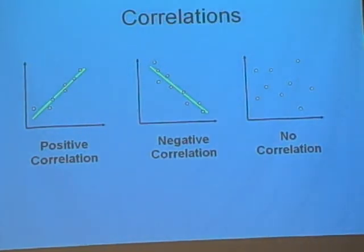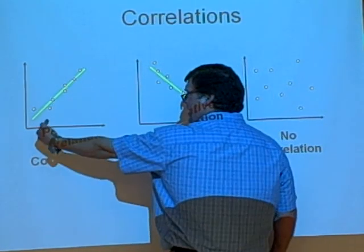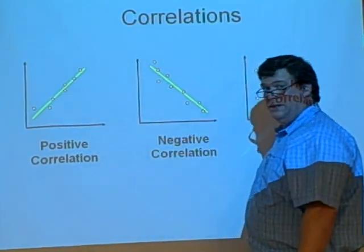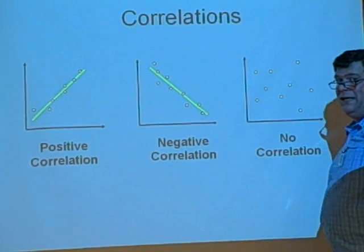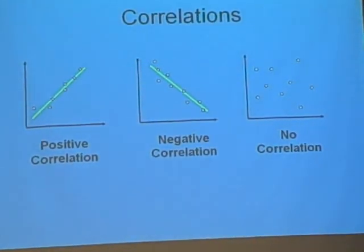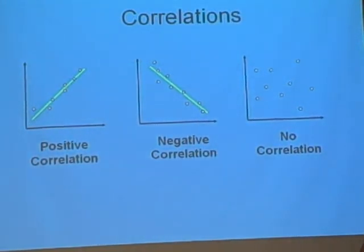Correlations. A positive correlation is when, as time goes by, your money is going up. That's a positive correlation. As time goes by, if your money goes down, that would be a negative correlation. When you've got dots all over the place like this, there is no correlation.